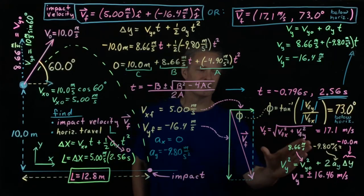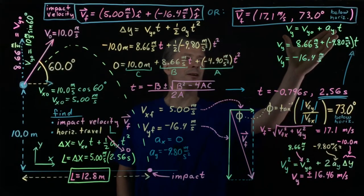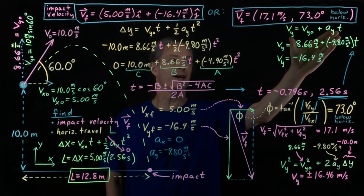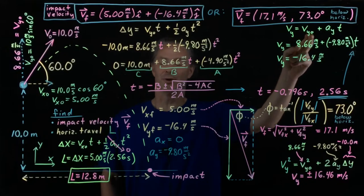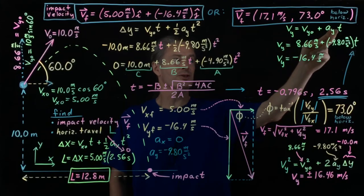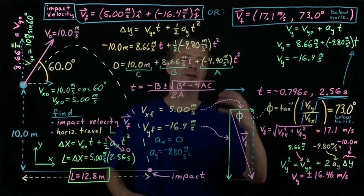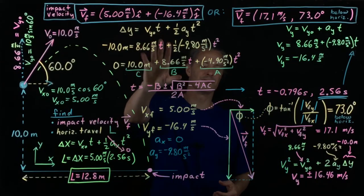Note that this method lets us calculate the y component of the impact velocity without first finding the time. Alternatively, if we had done this first, we could then plug the y component of velocity at impact back into the linear velocity equation and solve for the time — an alternate way to find the time without using the quadratic formula.